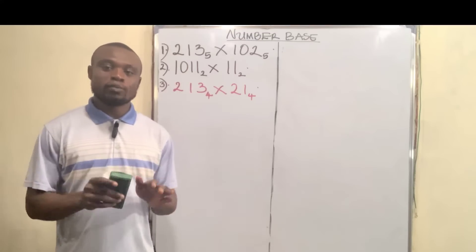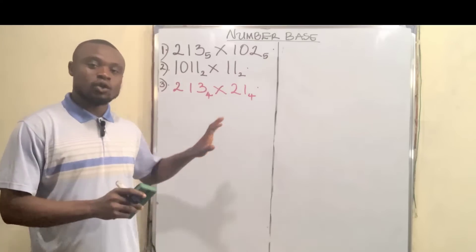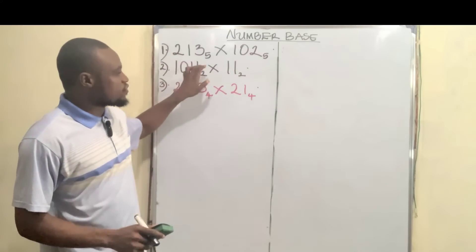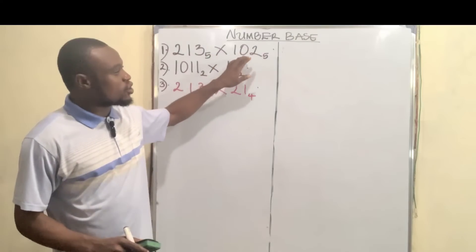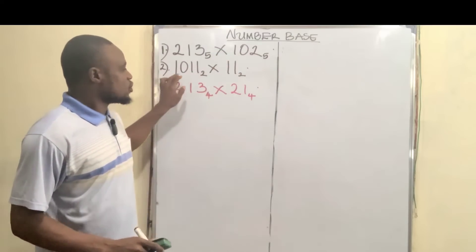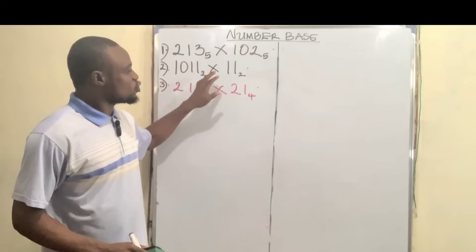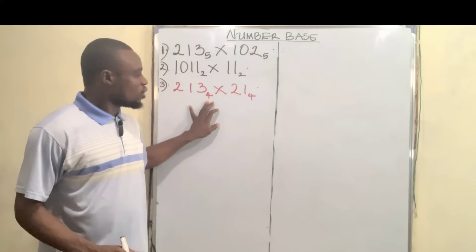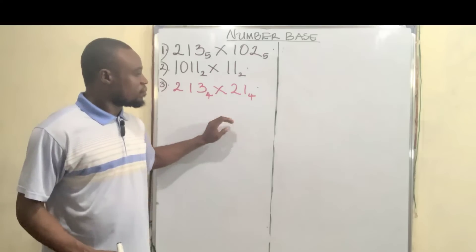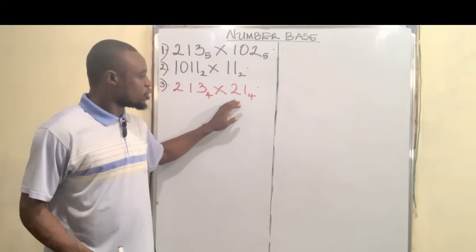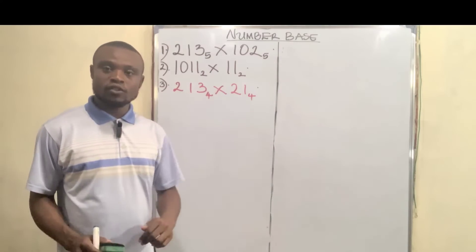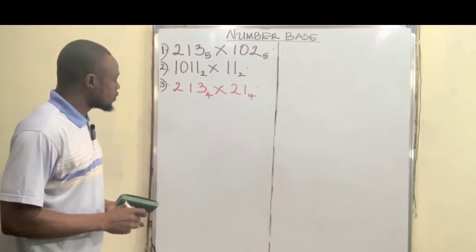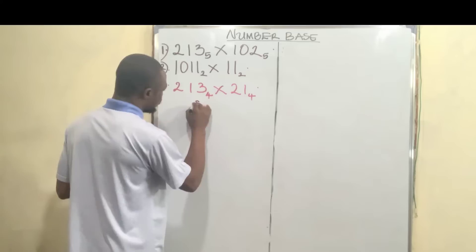Hello. Today I'll be explaining the multiplication of number bases, particularly with these examples on the board. The first one is 213 base 5 multiplied by 102 base 5. The second is 1011 base 2 multiplied by 11 base 2. And the third is 12213 base 4 multiplied by 21 base 4. So let's get to it — solution.